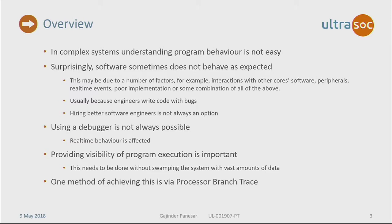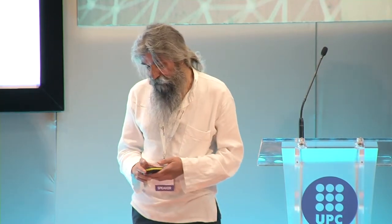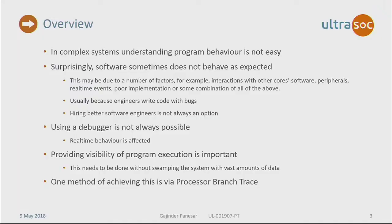Quite a lot of the time you want to see processor behavior and code behavior while the system's running, and see what effects it has when certain events happen inside the system. Providing visibility of program execution is very important. This needs to be done in a sensible way — if you provide instruction-by-instruction information you'll swamp the system and defeat the object of visibility. One way of providing this visibility is something called branch trace, which I'll describe shortly.